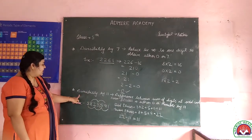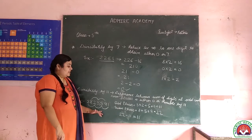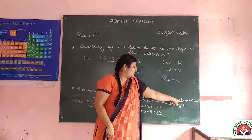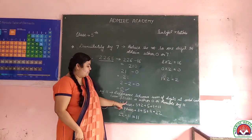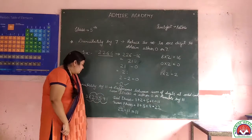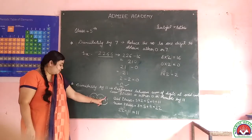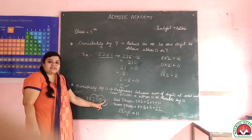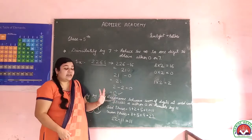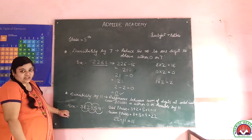Now, let us move to the divisibility by 11. To check whether a number is divisible by 11, we see the difference between the sum of digits at odd places and even places — that difference should be either 0 or divisible by 11.